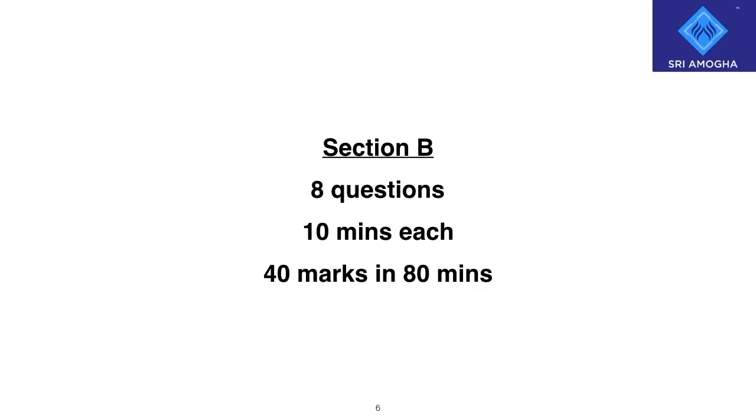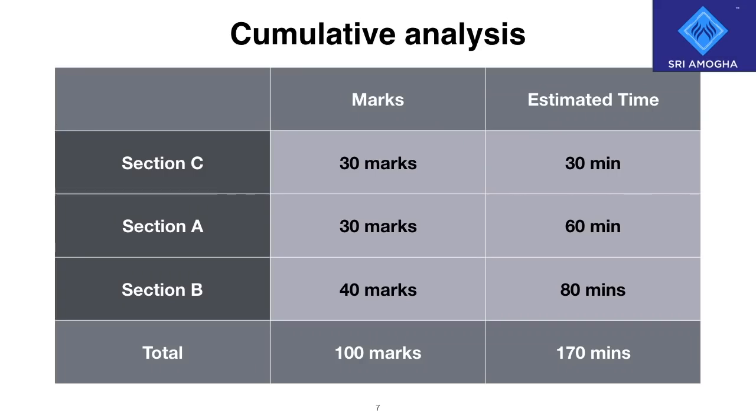Coming to cumulative analysis, first you wrote Section C in 30 minutes for 30 marks. Next, Section A in 60 minutes for 30 marks. Then Section B in 80 minutes for 40 marks. That's 170 minutes to complete 100 marks. The remaining 10 minutes will be used for revision.